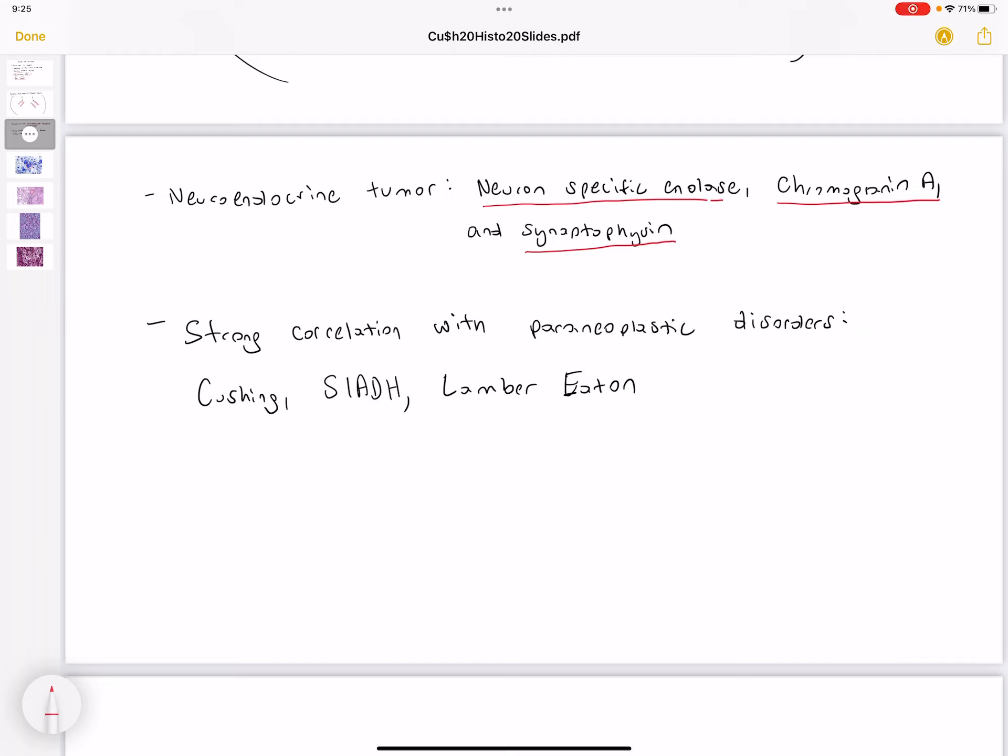Small cell carcinoma especially has a high correlation with these paraneoplastic disorders like Cushing's disease, which is high cortisol levels, SIADH, an increase in antidiuretic hormone, as well as Lambert-Eaton syndrome.